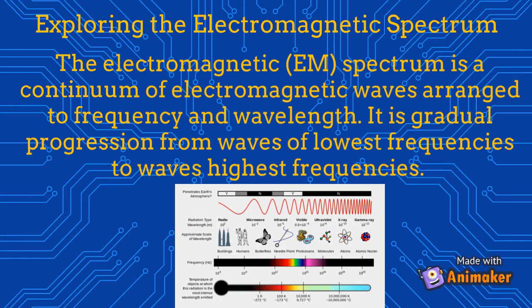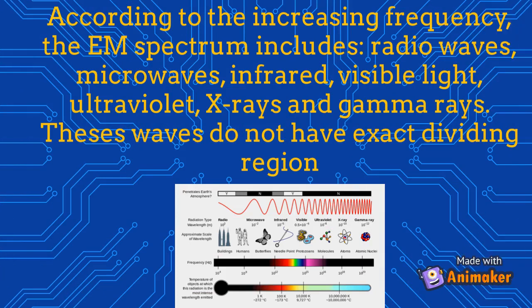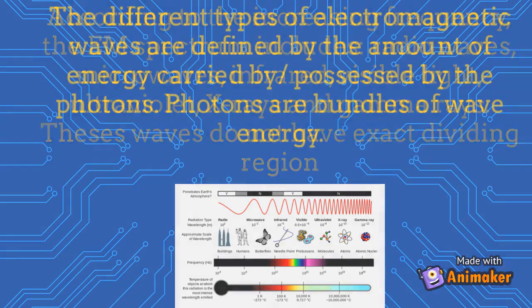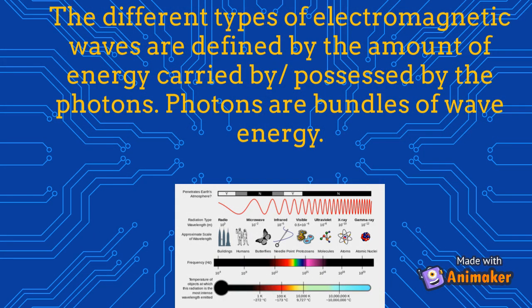The electromagnetic spectrum is a continuum of electromagnetic waves arranged by frequency and wavelength. It is a gradual progression from waves of lowest frequencies to waves of highest frequencies. According to increasing frequency, the electromagnetic spectrum includes radio waves, microwaves, infrared, visible light, ultraviolet, X-rays, and gamma rays. These waves do not have exact dividing regions.